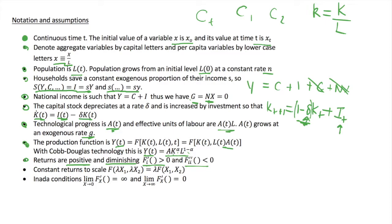We also have constant returns to scale, shown by this equation: if we increase both inputs — labour and capital — by some parameter lambda, this will also increase output by that same parameter lambda. So if we double both capital and labour, we will double our output.